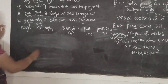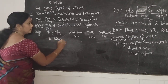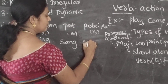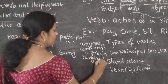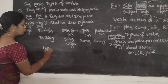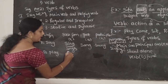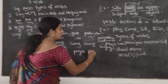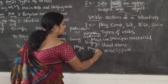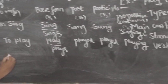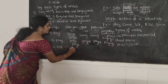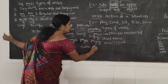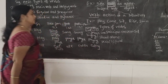Coming to these forms: to sing; sing or sings; sang; sung; singing. Another example: to play; play; plays; played; played; and playing. Next one — to eat; eat; eats; ate; eaten; eating. So we can write like this for the forms.